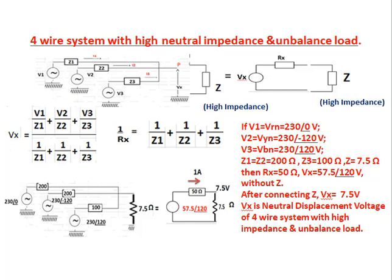For a 4-wire system with high neutral impedance and unbalanced load: three loads are connected with unbalanced load impedances and a high neutral impedance. If V1 = Vrn = 230∠0°V, V2 = Vyn = 230∠−120°V, V3 = Vbn = 230∠120°V, load impedances EZ1 = EZ2 = 200Ω, EZ3 = 100Ω, and EZ (neutral) = 7.5Ω, then with the neutral impedance disconnected, the open terminal voltage Vx = 57.5∠120°V.